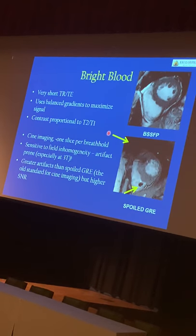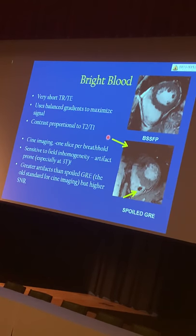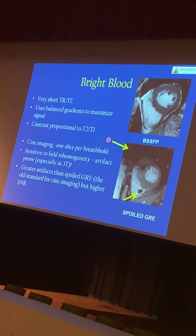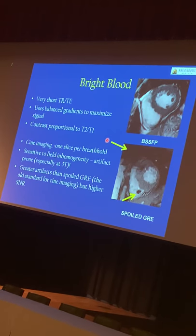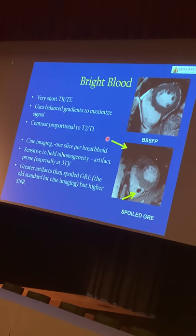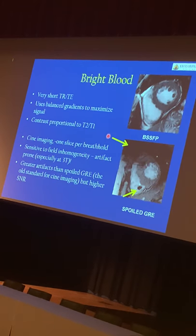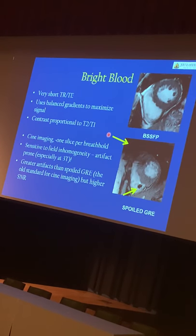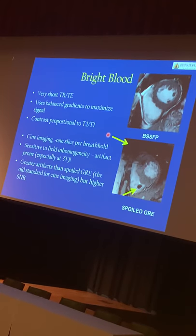We also want to make sure that we have adequate temporal resolution. Ideally, you want the temporal resolution to be between 30 to 60 milliseconds, so that you can adequately evaluate cardiac function and valve flows through the heart. The contrast is proportional to the T2 to T1 ratio. Usually in these cine images that are retrospectively gated, we obtain one slice per breath hold. But if your patient is a really poor breath holder, instead of doing retrospective gating, we can perform these sequences real-time — basically not gating the sequences, just having the machine on the whole time — and obtain lower resolution but faster images to still get a subjective sense of the function of the heart.